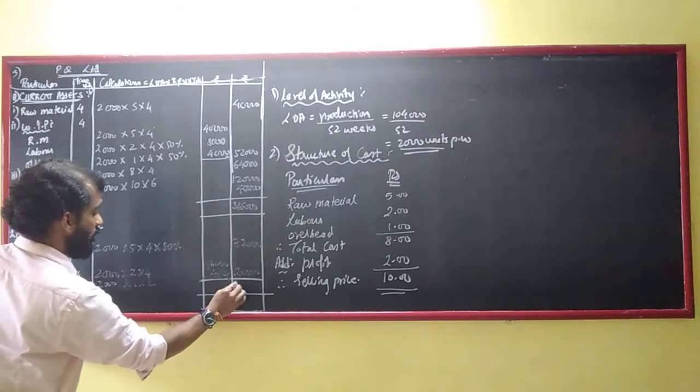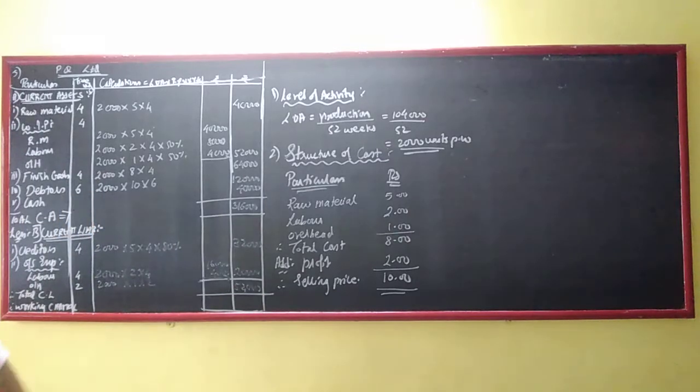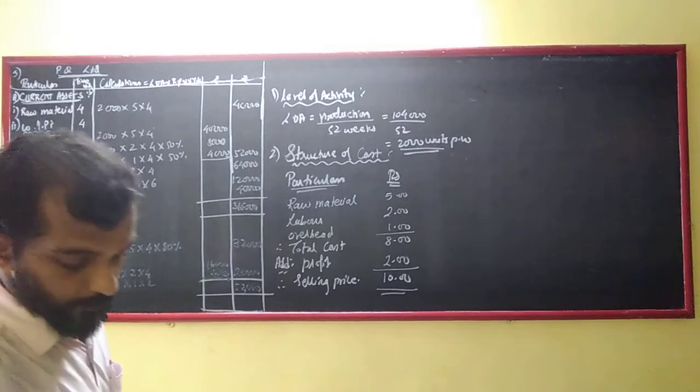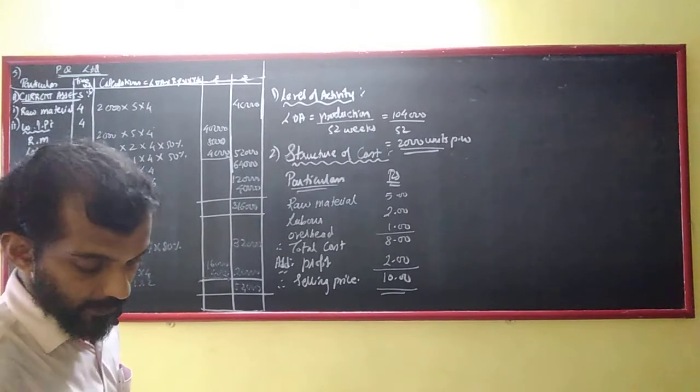Total current liabilities is 52,000. That means my total current assets is 316,000 minus 52,000.